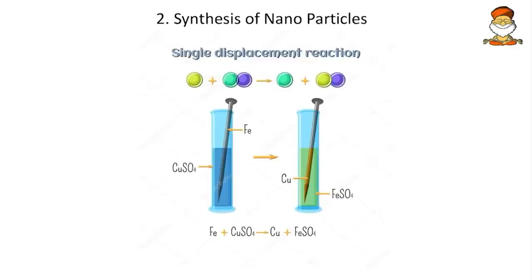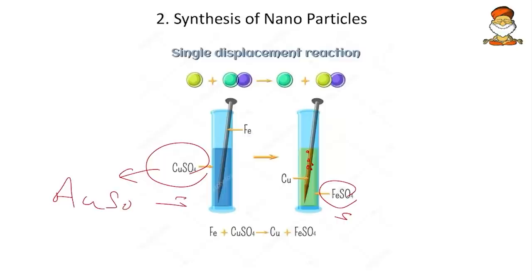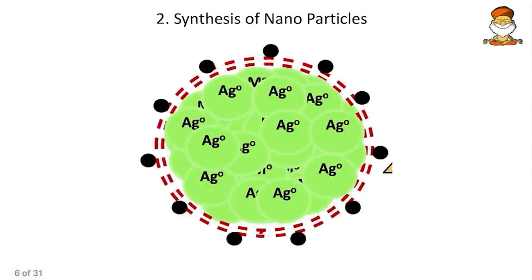Chemosynthesis: CuSO₄ solution is used along with an iron nail. The copper ions get deposited on the nail and ferrous sulphate solution is created. Similarly, using auric sulphate instead of copper sulphate produces gold nanoparticles deposited on the iron nail.